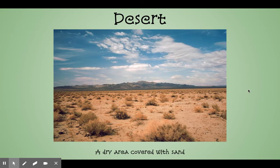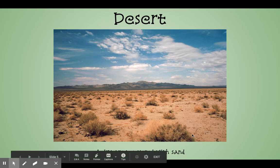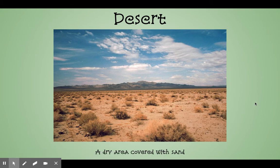Desert. Desert is a dry area covered with sand. So this is a picture of a desert. Desert can be flat, but there also can be mountains in the desert. There are plants, but not very many of them. See how there's not a whole lot of green and there's a lot of sand.